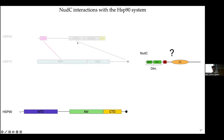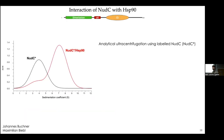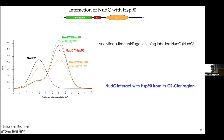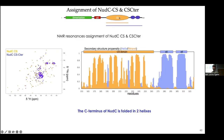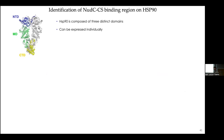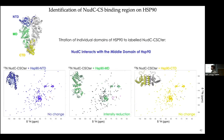We then continued with HSP90 using a very similar pipeline. Analytical ultracentrifugation confirmed NUTC forms a complex with HSP90, and competition experiments showed the C-terminal region of NUTC contains the binding site for HSP90, which is expected since it harbors the CS domain. Going to NMR and assigning the backbone — using multiple constructs — we found a CS domain in exactly the expected fold from crystal structures, but we also observed unexpectedly two large helices at the C-terminus of the protein. We then performed titrations using a single domain of HSP90 at a time.